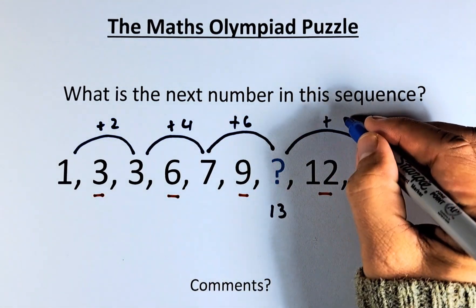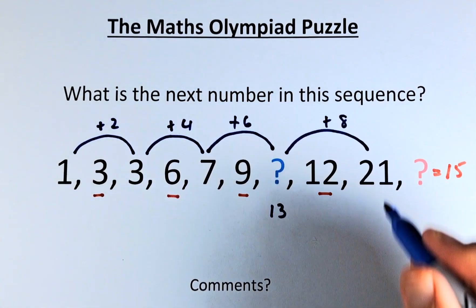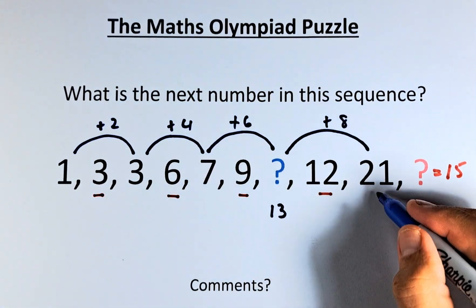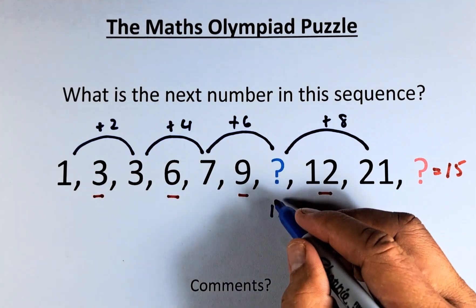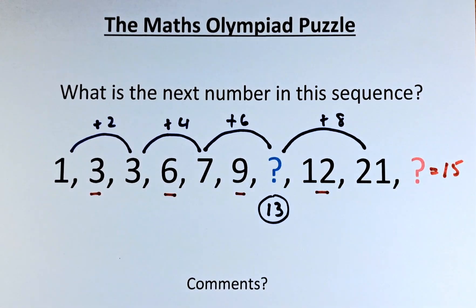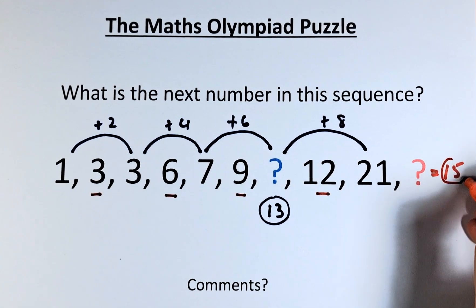And then 13 plus 8, because the pattern is 2, 4, 6, 8. 13 plus 8 will give you 21. So in that case, the blue question mark equals 13, and the red or orange question mark equals 15.